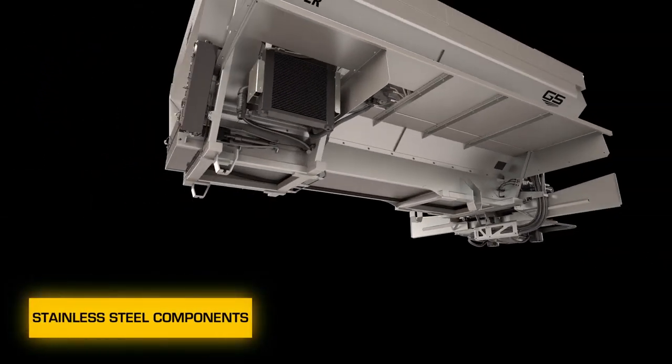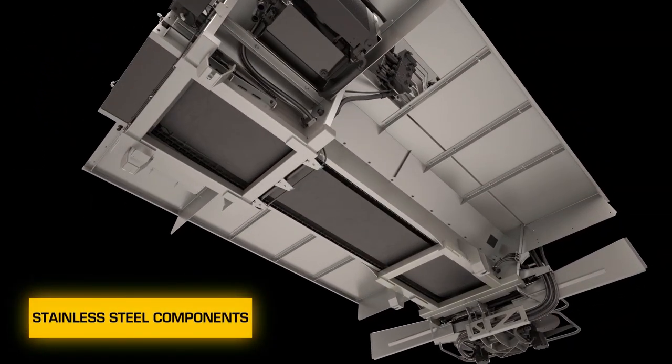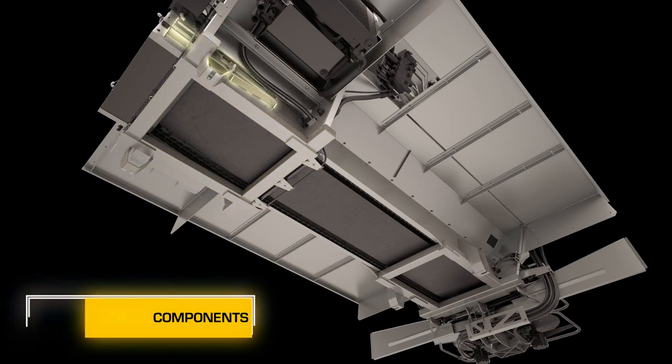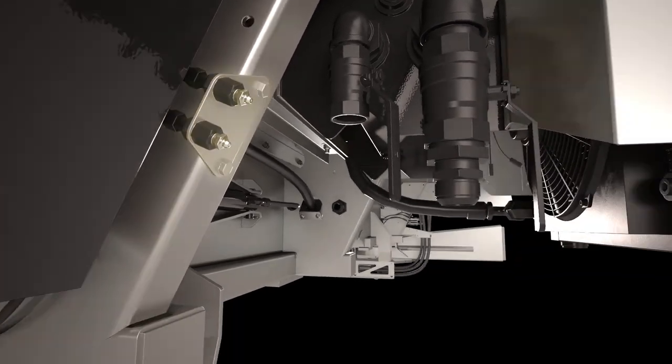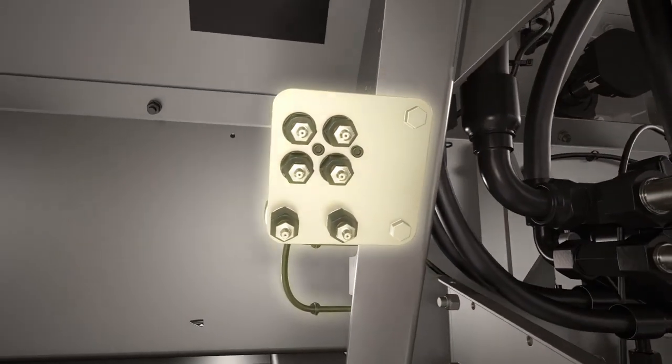New Leader products are sturdy and operate in the harshest environments. Key components are made of 304 stainless steel to resist corrosion and maintain their integrity. The front and rear grease banks on the NL5000 G5 make greasing the machine easy and efficient.